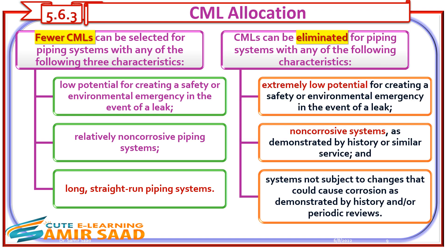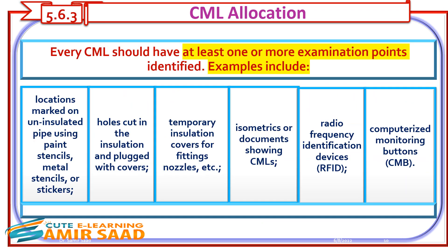CMLs can be eliminated for piping systems with any of the following characteristics: extremely low potential for creating a safety or environmental emergency in the event of a leak; non-corrosive systems as demonstrated by history or similar service; and systems not subject to changes that could cause corrosion as demonstrated by history and/or periodic reviews. Every CML should have at least one or more examination points identified.